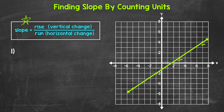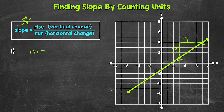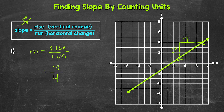We need to figure out how far up and how far over we go between these two points. Moving from the left point to the right point, we go up three units to align with the other point — that's our rise, the vertical change. Then we go over four units to get to the other point — that's our run, the horizontal change. So slope, using M for slope, equals rise over run: the rise is three, the run is four, giving us a slope of three fourths.